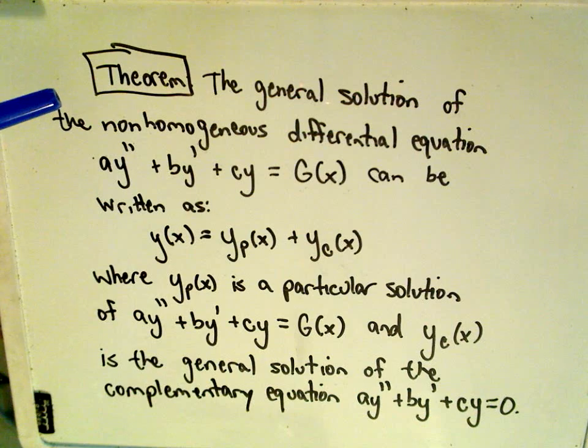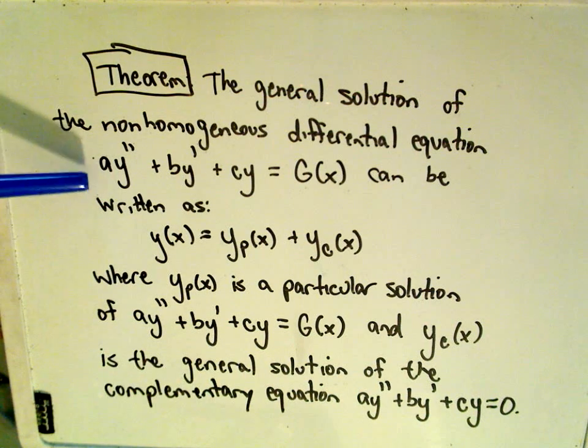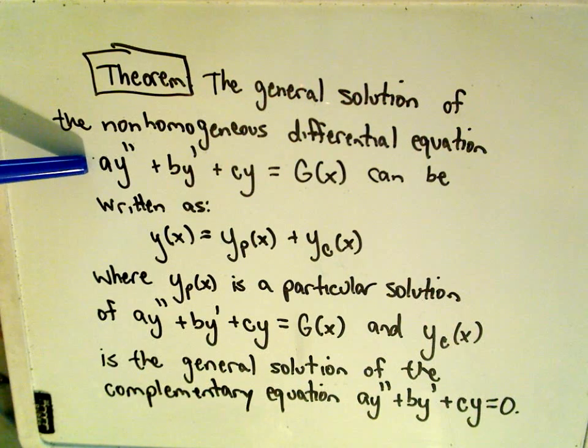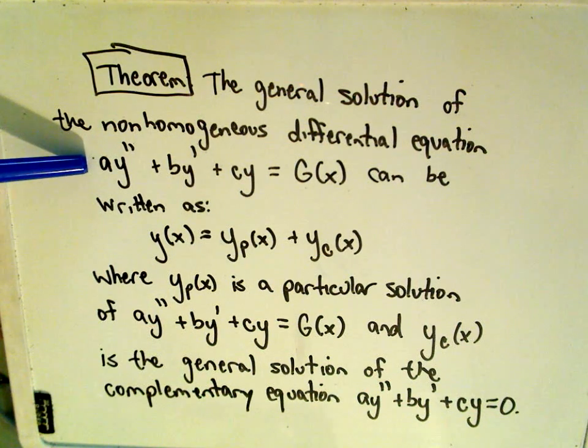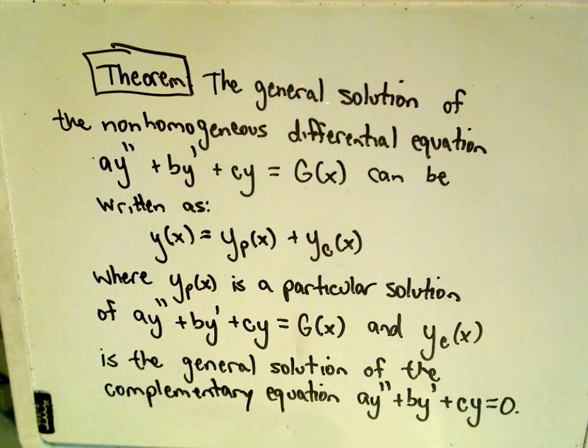So the first part is just the theorem here. It says basically, okay, we're trying to solve one of these non-homogeneous second-order linear equations. It says basically to get the solution of that, you have to look at two different things.